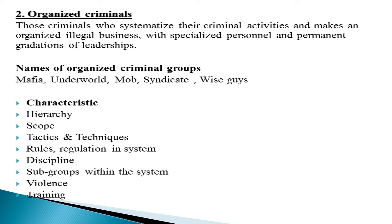The second type is organized criminals. Those criminals who systematize their criminal activities and make an organized illegal business with specialized personnel and permanent gradation of leadership. Organized criminal means it is a massive network composed of different people with their permanent gradation of leadership. Members have different designations with complete jurisdiction and power over their locality and team members, who operate criminal activities under their supervision.